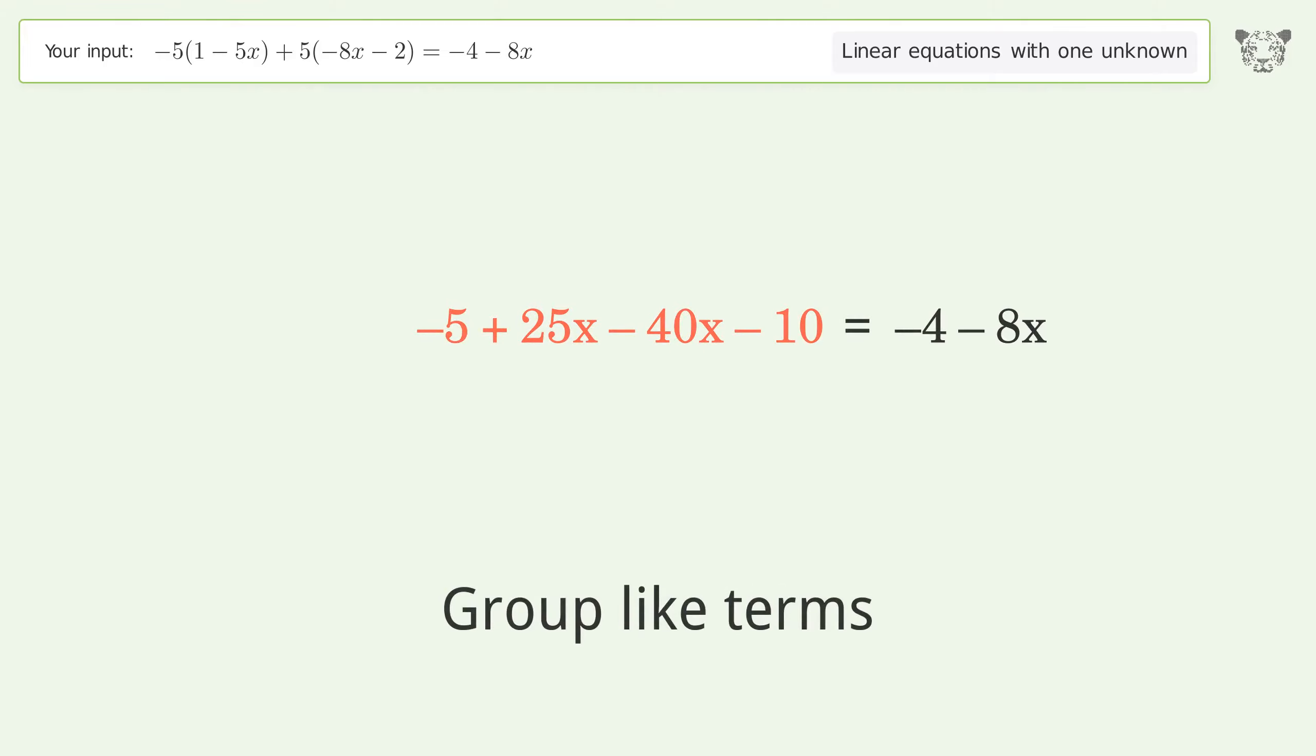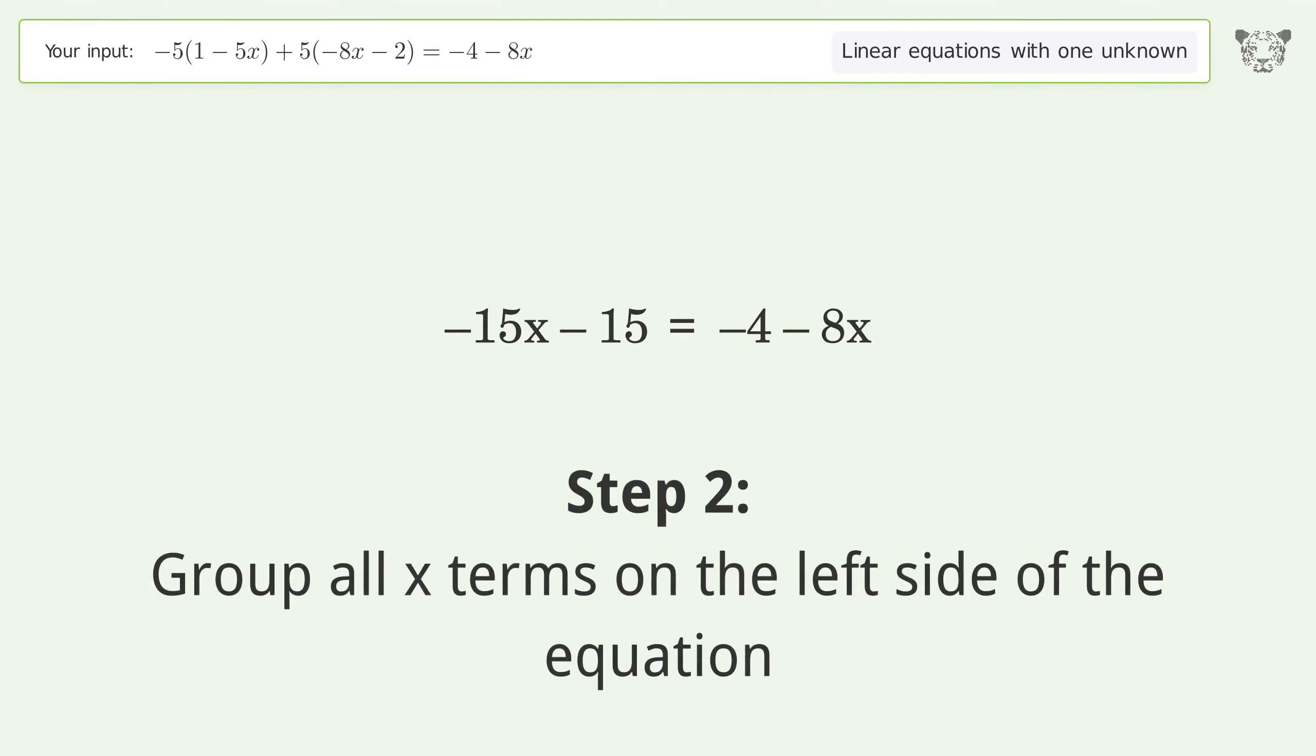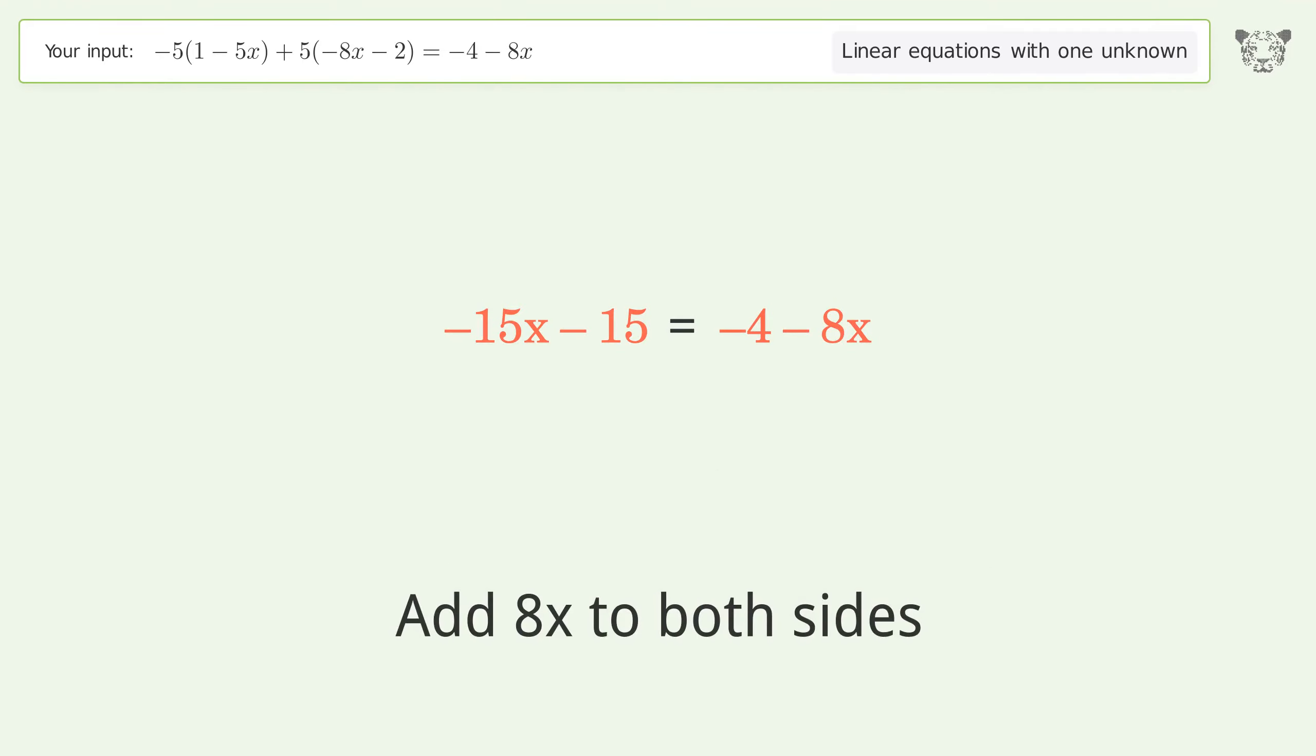Group like terms and simplify the arithmetic. Group all x terms on the left side of the equation by adding 8x to both sides. Group like terms and simplify the arithmetic.